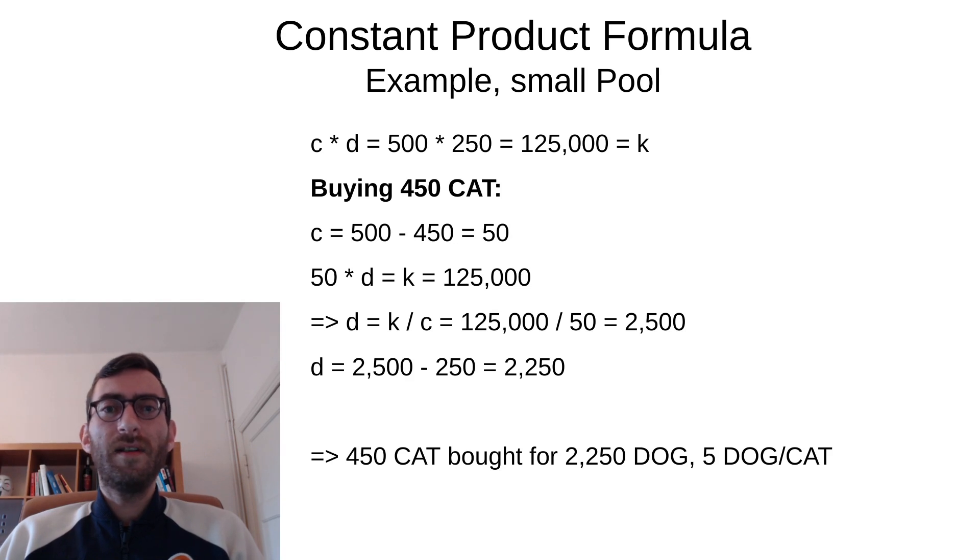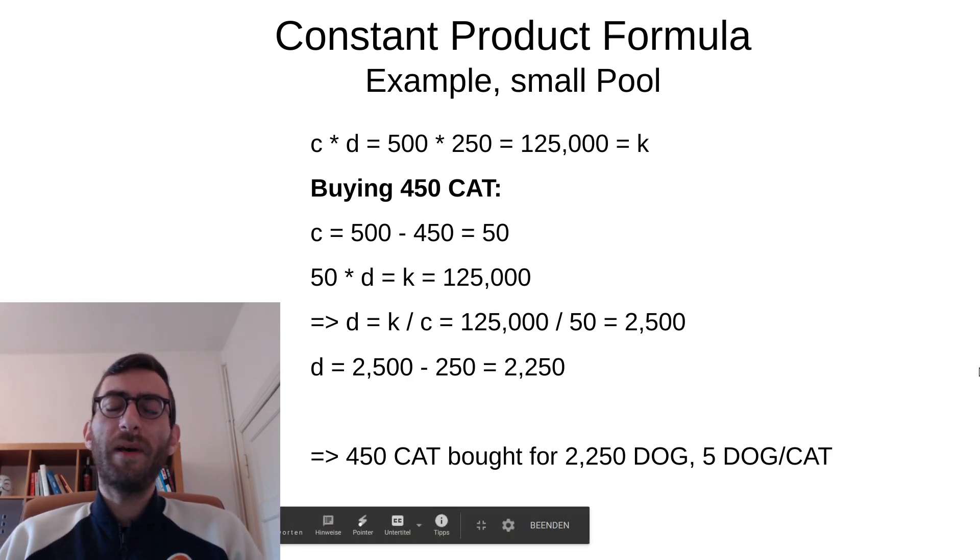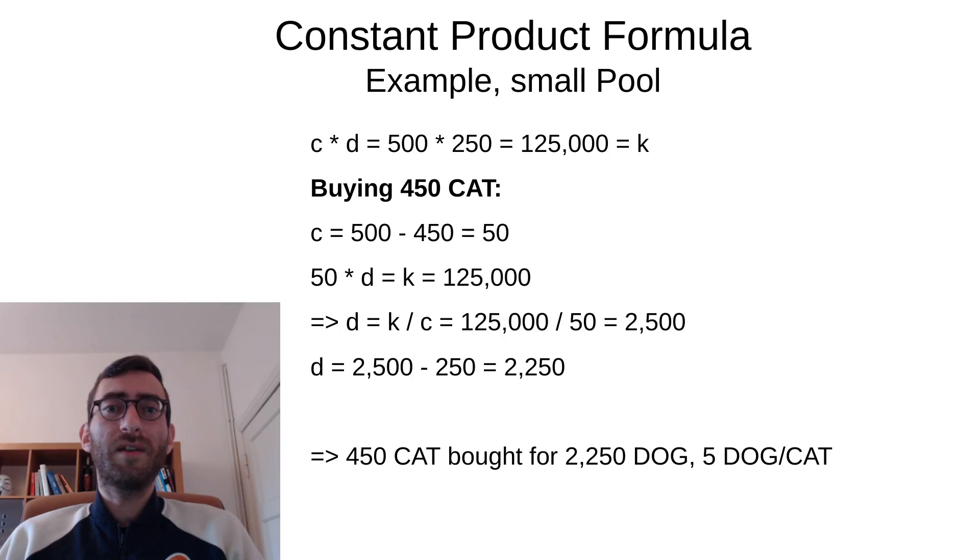So yeah, if you buy half of one token, you will pay about twice the market price. And in a really extreme example, buying 450 out of all the 500 cat tokens that are in the pool, it's a small pool to make this effect really obvious. This means that afterwards we only have 50 cat left in the pool because I'm buying 90%. There's only going to be 10% left over. Now I need to multiply 2500 with 50 to remain on my constant 125K. This means that on top of the 250 dog that were in the pool to start with, to pay for my 450 cat I now have to pay 2250 dog tokens. And this means I now need to pay five dog for one cat, which is 10 times the market price. And why is this so high? Well, because this trade reduces the liquidity of the one token massively. And that's precisely not what the idea behind these pools is.